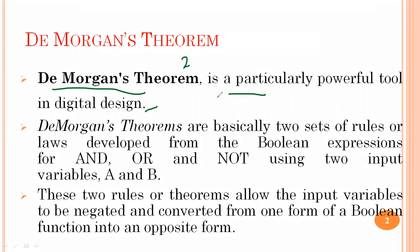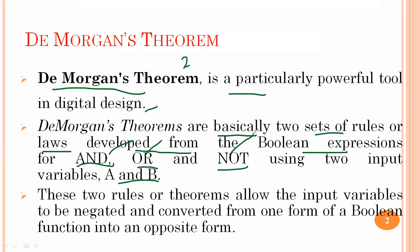Basically, this theorem is based on the conversion of multiplication to addition and addition to multiplication. So in this we have two sets of equations. De Morgan's Theorem consists of two sets of rules or laws developed from Boolean expressions using AND, OR, and NOT with two important variables A and B. We use these three basic gates — AND, OR, NOT — to define the two sets of equations. These two rules allow input variables to be negated and converted from one form of Boolean function into an opposite form.